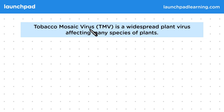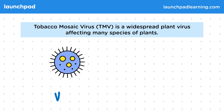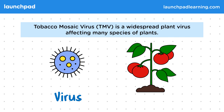Tobacco mosaic virus, or TMV, is a widespread plant virus affecting many species of plants. Remember, this is a virus that affects plants. It infects tomato plants, which are commercially and economically important.